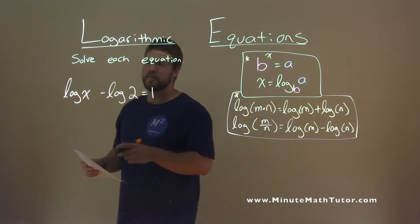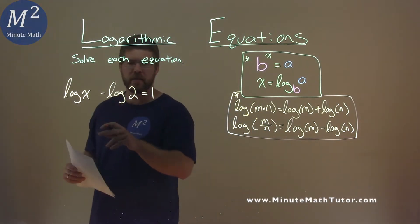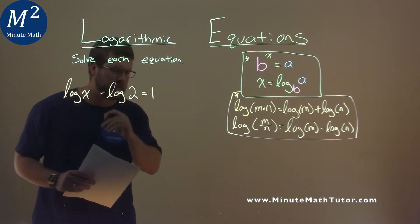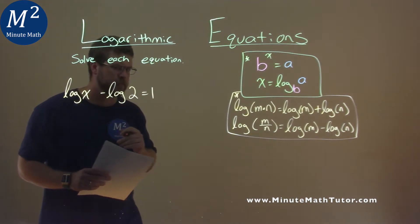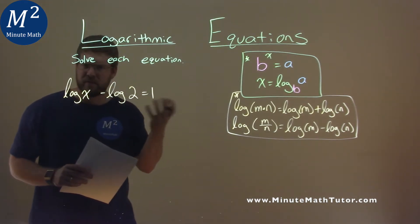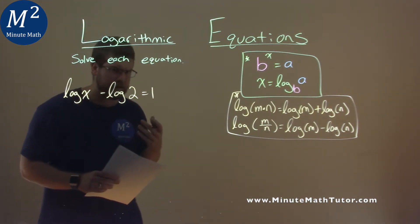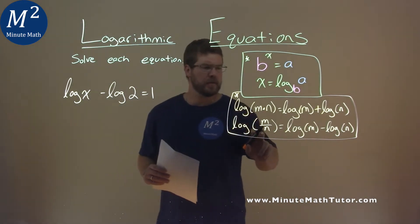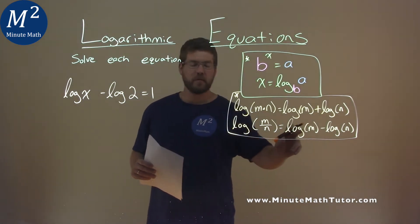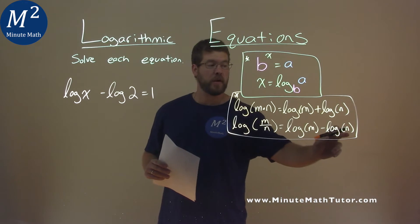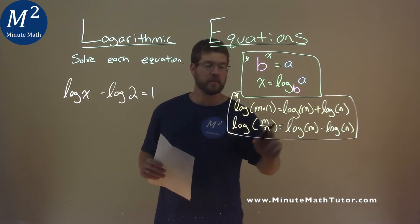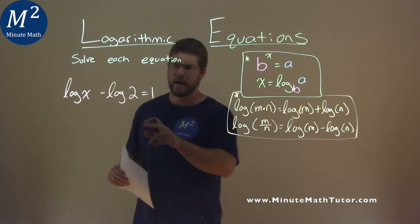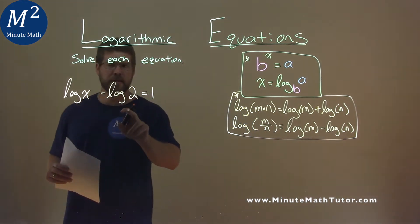We're given this problem right here: log of x minus log of 2 equals 1, and we need to solve it. Now these logs have the same base of 10. Our formula here, the second part, says if we have log of m minus log of n, it's equal to log of m divided by n. And we have that here — we can adapt that.